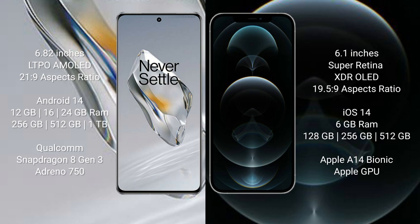OnePlus 12 comes with 12GB, 16GB, or 24GB RAM and 256GB, 512GB, or 1TB internal storage. It features the Qualcomm Snapdragon 8 Gen 3 processor and Adreno 750 GPU.